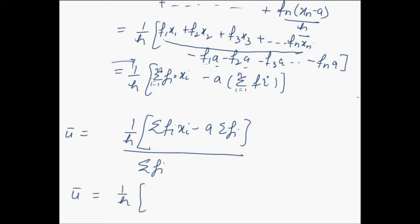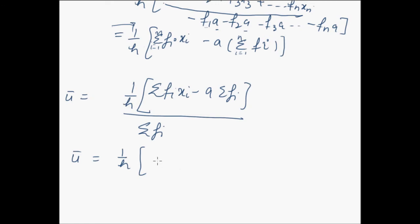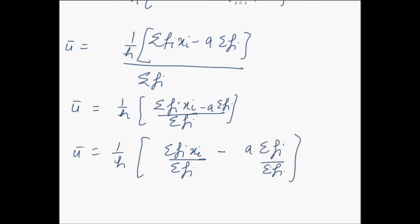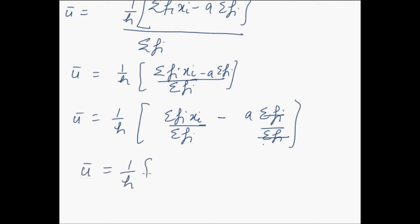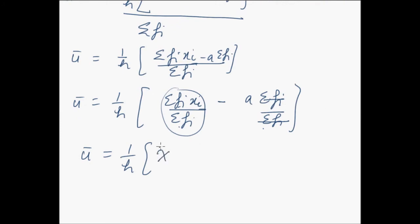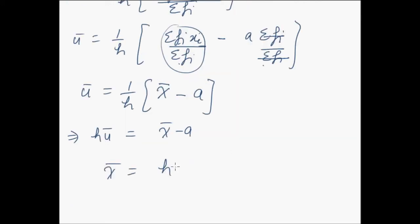Now we can take 1/h common and the further calculations will be summation fi*xi over summation fi minus a*summation fi over summation fi. Since the numerators and denominators cancel, we are left with u bar equals (1/h)*(x bar minus a). Now, summation fi*xi over summation fi is nothing but the mean x bar. So on cross multiplying, h*u bar equals x bar minus a, or we can say that x bar equals h*u bar plus a.